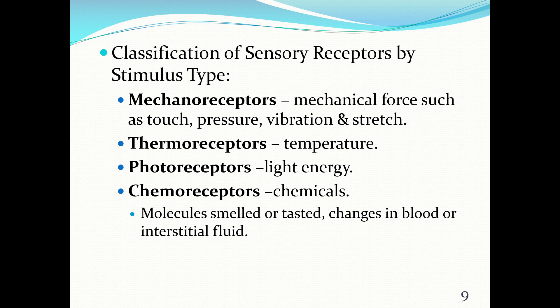Let's look at the classification of sensory receptors by stimulus type. There are mechanoreceptors, thermoreceptors, photoreceptors, and chemoreceptors. Mechanoreceptors respond to mechanical forces such as touch, pressure, vibration, and stretch. Thermoreceptors detect temperature. Photoreceptors detect light energy. Chemoreceptors detect chemicals — they will detect molecules that are smelled or tasted, as well as changes in the blood or the interstitial fluid.